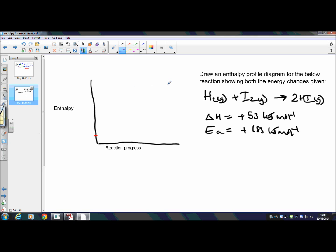OK, so this is a very similar question. It's drawn into the profile diagram for the reaction below, like before. This time it's for the production of hydrogen iodide and we have a delta H of positive 53 and an Ea of plus 183.